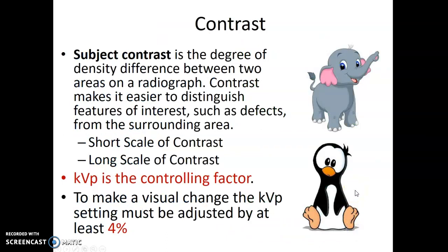What is contrast? Subject contrast is the degree of density difference between two areas on a radiograph. It makes it easier to distinguish features of interest, such as defects from the surrounding area. It's separated into short-scale contrast and long-scale contrast. KVP is the controlling factor of subject contrast. To make a visual change, you have to adjust it by at least 4%.